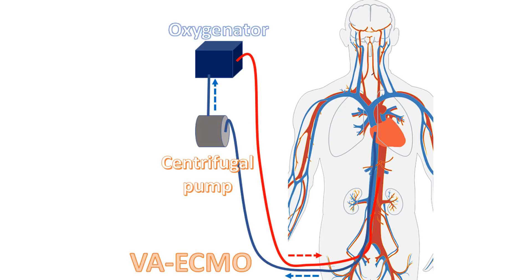The sternum was left open in 10 cases. Extracorporeal membrane oxygenation support was necessary in nearly half of the patients. Mechanical ventilation was needed from 1 to 16 days. Post-operative left ventricular function was preserved in about 90% of patients. Only one patient had mild myocardial dysfunction at time of discharge. The authors concluded that primary arterial switch operation can be considered even beyond 8 weeks if mechanical circulatory support and expert cardiac intensive care unit services are available.